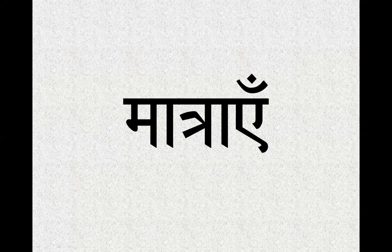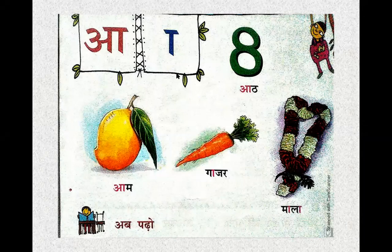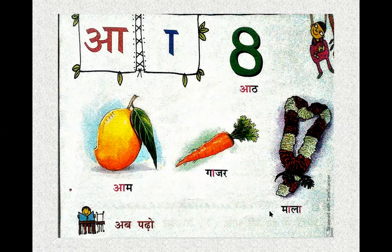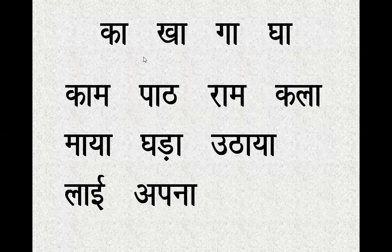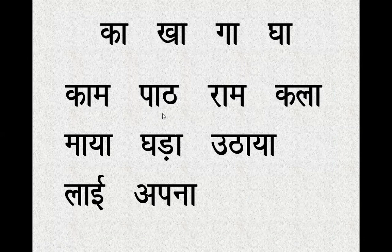We are going to read letters as well as words. Let's begin. The ā symbol is a long line. When this long line comes with a letter, you should say the long form — 'ā'. Let's see some more words. Can you read? Art, lesson, Ram.